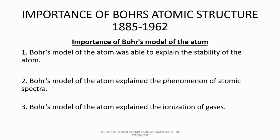Now, the importance of Bohr's model of the atom: First, the Bohr model of the atom was able to explain the stability of the atom. We realized from Bohr's model that Bohr said the electrons revolve or orbit around the nucleus of the atom in a stationary state. Bohr's model helped us explain how stable the atom is — by letting us know that for the atom, we have electrons in a stationary state, just orbiting around the nucleus, while protons and neutrons are within the nucleus.